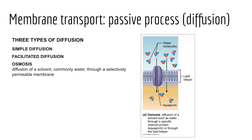Finally in our exploration of passive diffusion, we have osmosis — a special form of diffusion involving the net movement of a solvent such as water through a selectively permeable membrane. Ultimately, a solute moves from an area of low solute concentration to an area of high solute concentration, essentially diluting the solute. The solvent can move in one of two ways: it might pass directly through the lipid bilayer, or it may move via integral membrane proteins called aquaporins, which we'll see when we study the urinary system near the end of the school year.